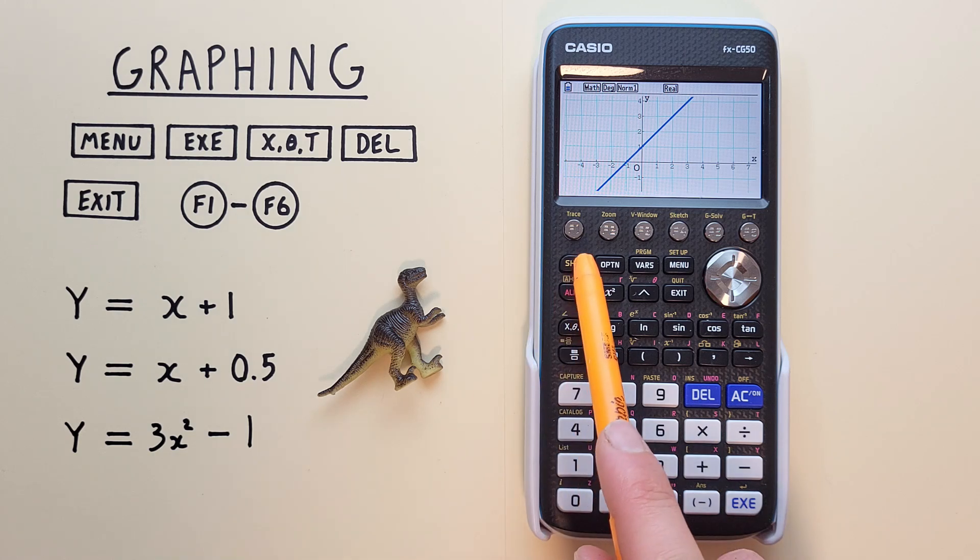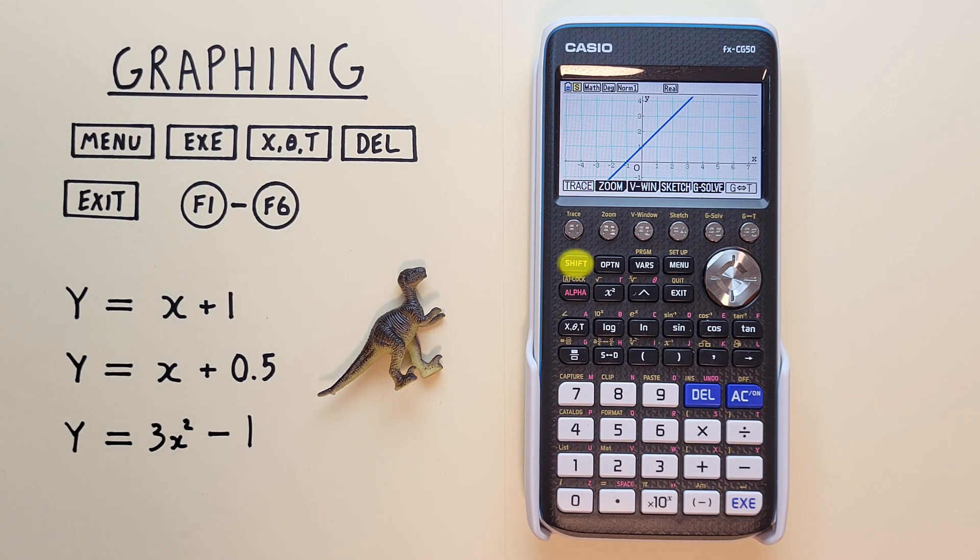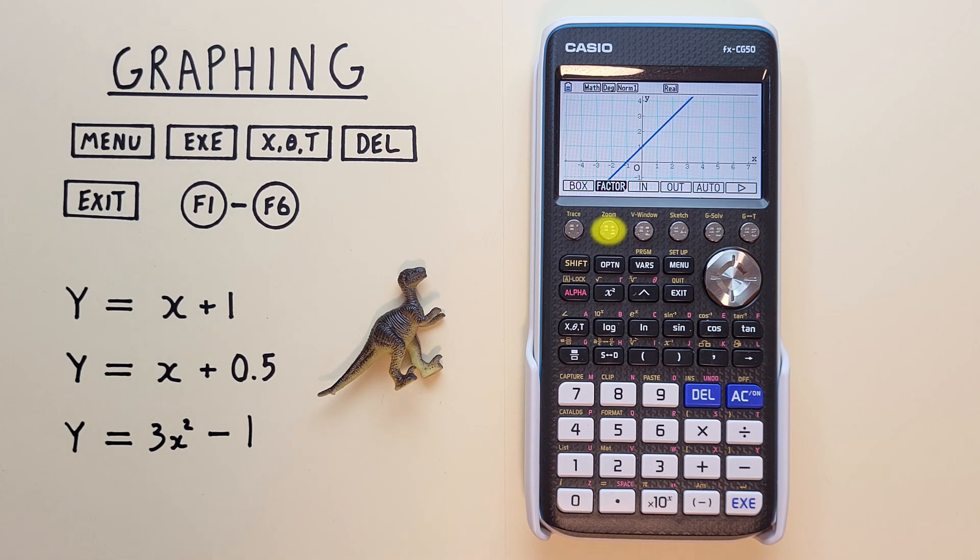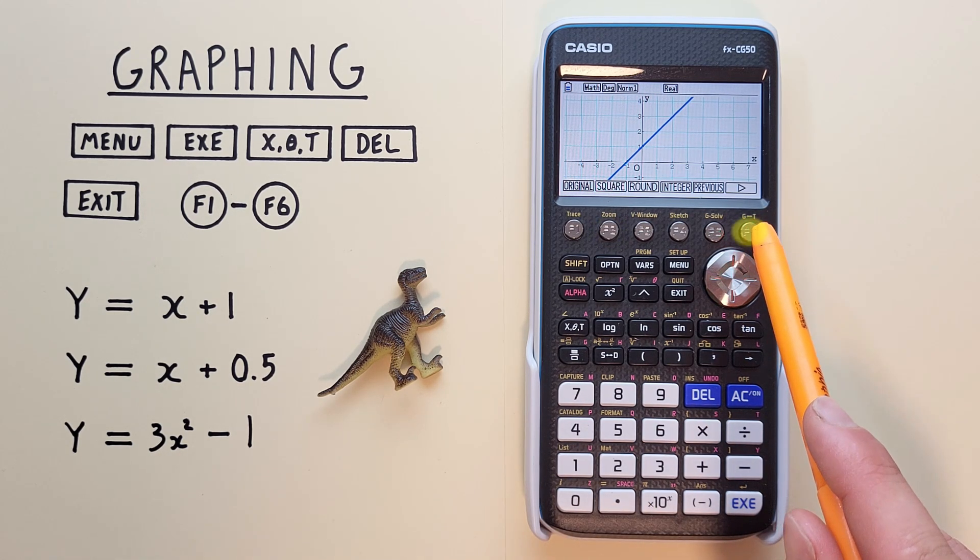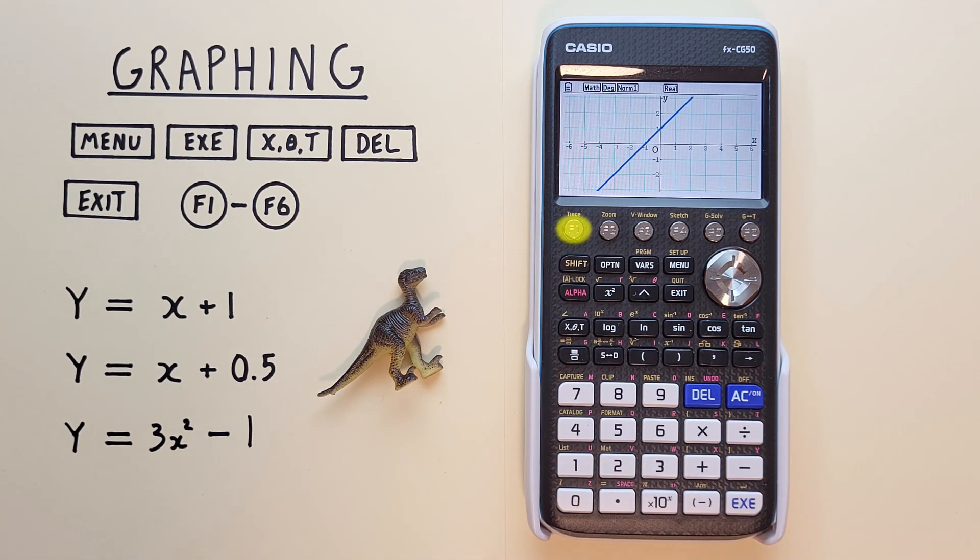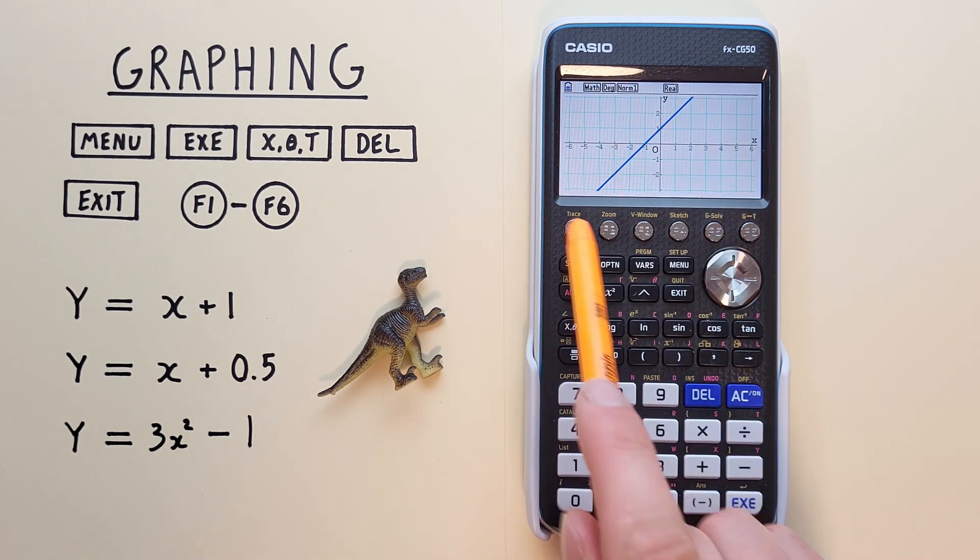and if we want to go back to our original position, all we have to do is press Shift, F2 for zoom, F6 to go to the next menu, and then F1 original. And we're back where we started there.